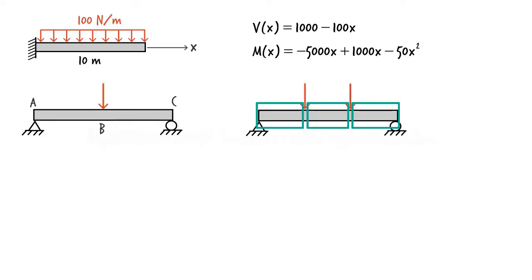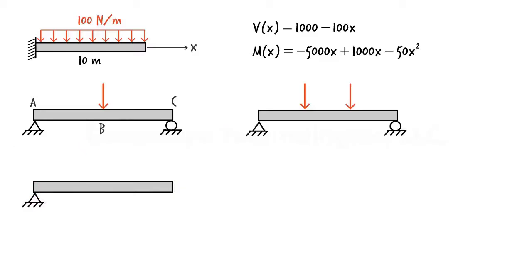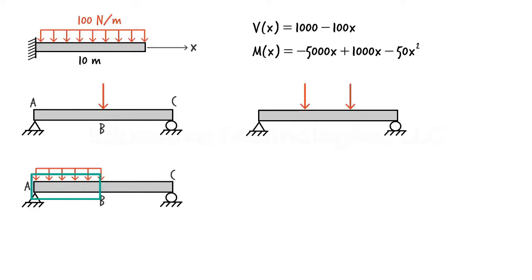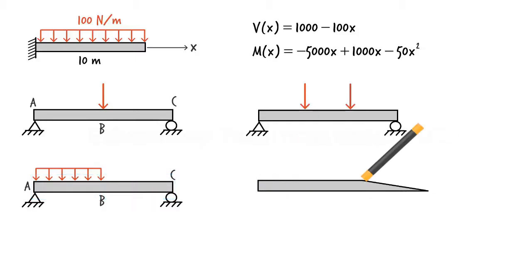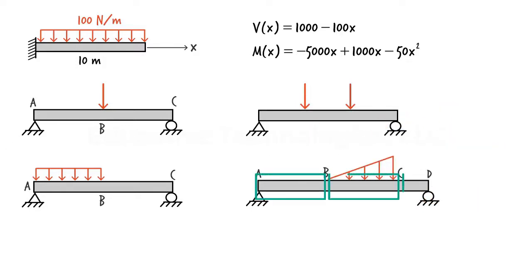The need for multiple shear and moment equations also arises when the beam is partially subjected to distributed loads. For example, a uniformly distributed load divides the beam into two segments: segment AB, which is directly under the load, and segment BC, which is load-free. Therefore, we need one set of equations for each segment. In another example, a triangular load divides the beam into three segments — AB, BC, and CD — requiring three pairs of shear and moment equations, one for each segment.